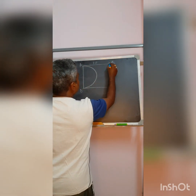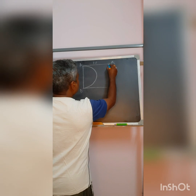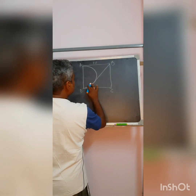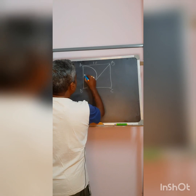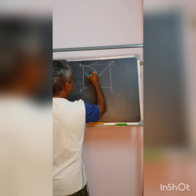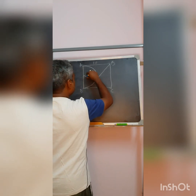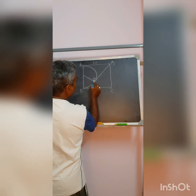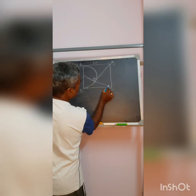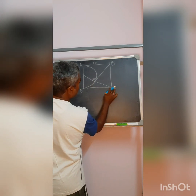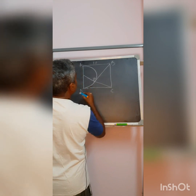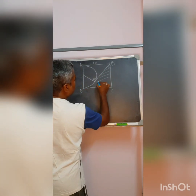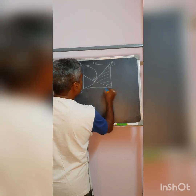There is a tangent being drawn from B to the half circle, which is touching at point P. The centre of the half circle to P is drawn — this will obviously be 90 degrees. Then P is further connected to C, and now we have to calculate the area of the shaded part.